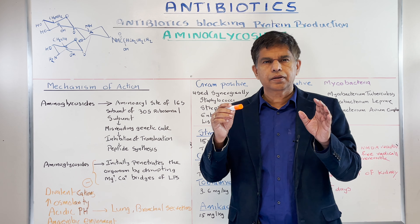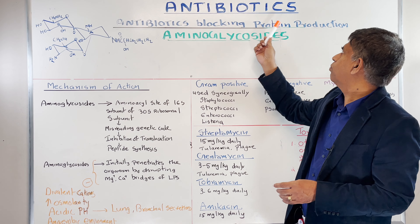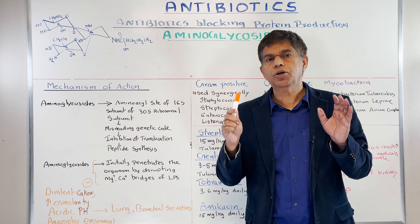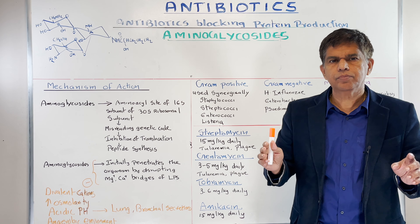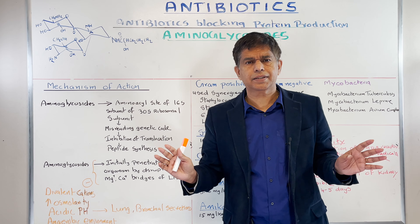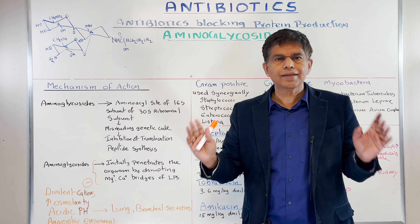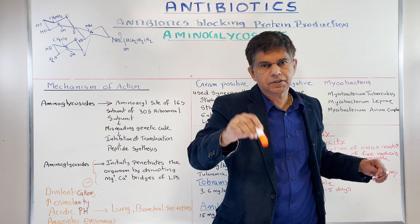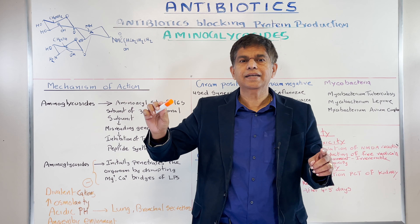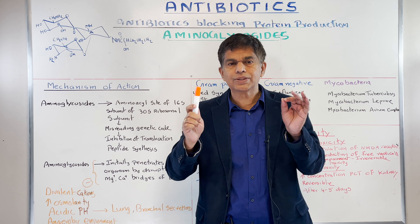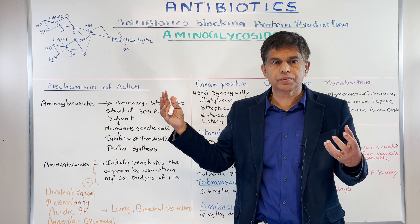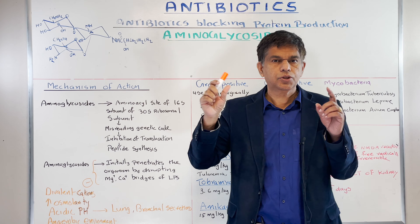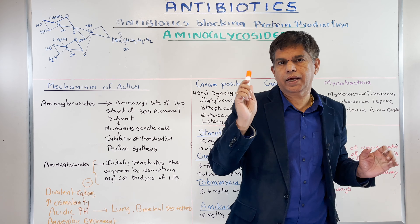The topic is about antibiotics blocking protein production. Today we're going to talk about aminoglycosides — a very, very important drug class, important for examination purposes and clinical situations as well. First thing we have to do is look at the structures. You've got two amino sugars linked by a glycosidic linkage joining those two amino groups. That's why it's called aminoglycoside — two amino groups, glycosidic linkage. Remember that.